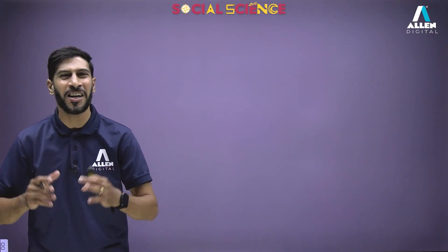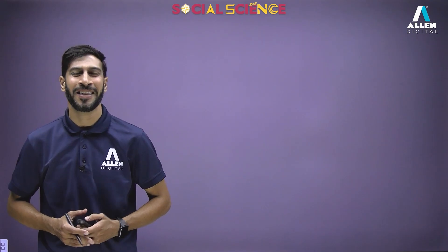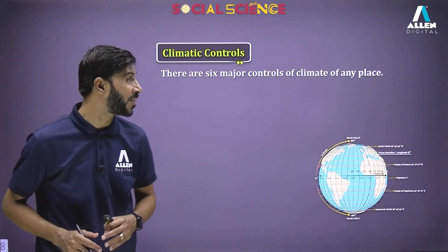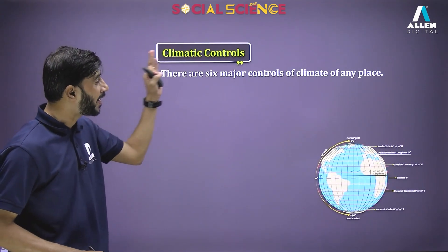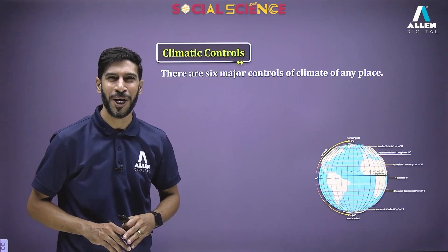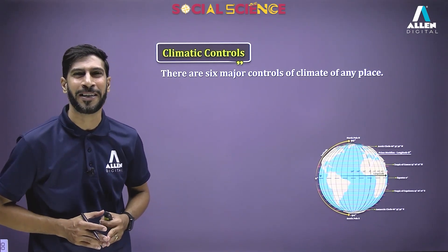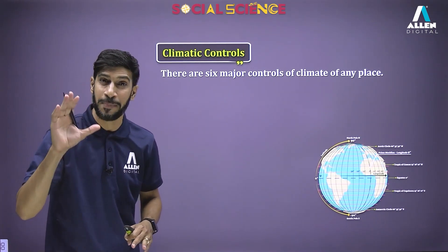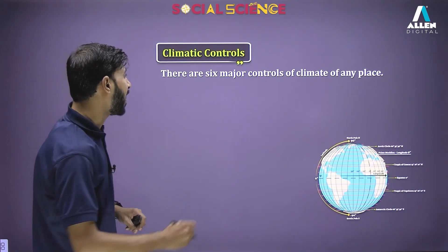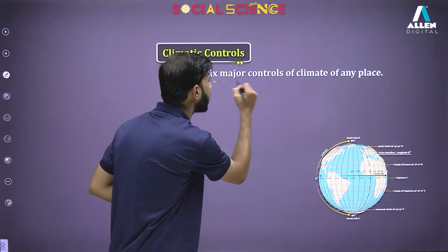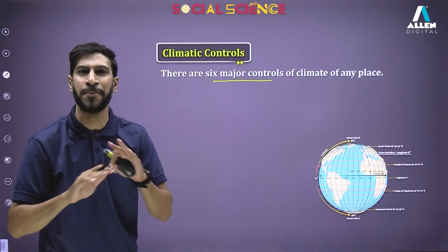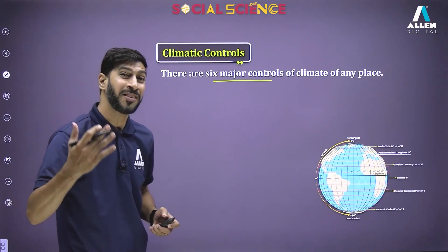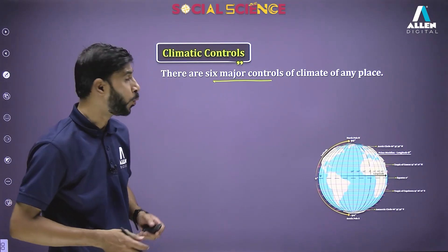Hello students, we are learning the chapter Climate. Today in this lecture we are going to discuss about the climatic controls. When we talk about climatic controls, do remember there are six major controls of climate of any place. Now which are these climatic controls we are talking about — which are the six major controls?